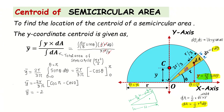Further simplifying: cos(π) = −1 and cos(0) = 1, so we get −(−1 − 1) = −(−2) = 2. Multiplying by the constant, the value is −(2r/3π) × (−2) = 4r/(3π).